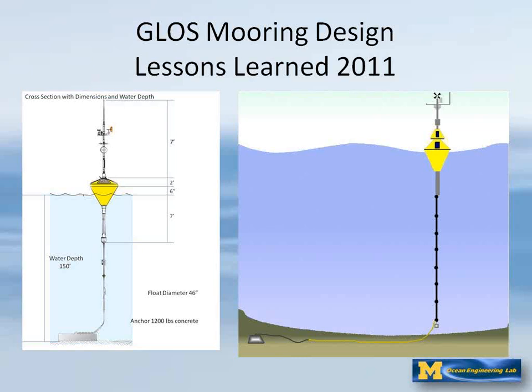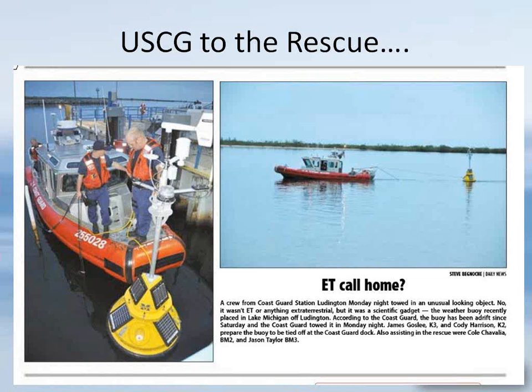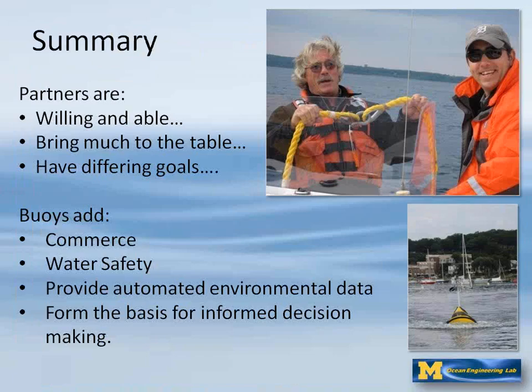Buoys without the thermistor string have a simpler mooring, but with the thermistor string to the bottom, there's a small counterweight to keep the thermistor straight and vertical. We've had some tangling issues with our mooring this year, which caused a couple of buoys to break loose and go wandering off on their own. The Coast Guard has been very helpful in recovering those, as have our community partners. We had never had this happen before — something special this year. Having excellent community partners — I can't say enough about that.